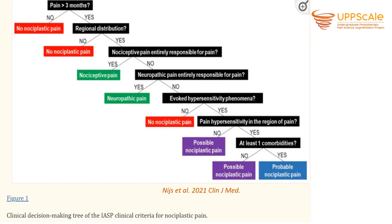You can also use a clinical decision-making tree for nociplastic pain, where pain needs to be present for longer than three months and have a widespread distribution. You need to rule out nociceptive and neuropathic pain. There needs to be hypersensitivity or allodynia, and at least one comorbidity such as poor sleep, poor concentration, or sensitivity to sound or temperature. Then you can say the patient has possible nociplastic pain.